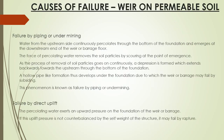There are mainly four different failure modes of weirs on permeable soils. The first is failure by piping or undermining. Water from the upstream side continuously percolates through the bottom of the foundation and emerges at the downstream end of the weir or barrage floor. The force of percolating water removes soil particles by scouring at the point of emergence. As this process continues, a depression forms and extends backwards towards the upstream through the bottom of the foundation, developing a hollow pipe-like formation under the foundation, due to which the weir or barrage may fail by subsiding.